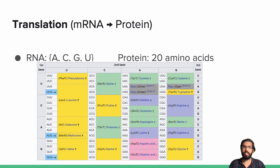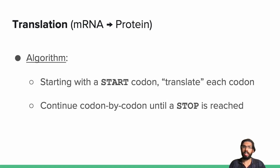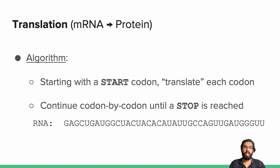The simplified algorithm behind translation for the purpose of this course is as follows: start with a start codon early in the RNA sequence, which is not necessarily the first one, and translate each codon one by one until a stop codon is reached. AUG, which stands for methionine, is a common start codon, but many bacteria have various different start codons. For an example, let us say I want to translate this RNA sequence. I would start by translating an early start codon — in this case AUG — which is encoded for M, the first letter in my protein sequence.